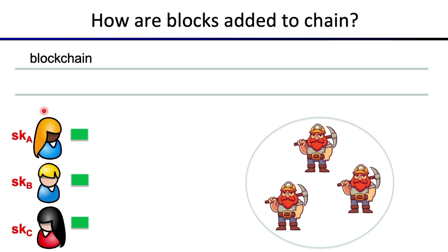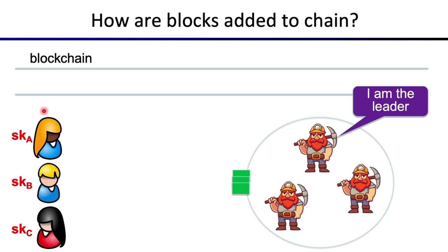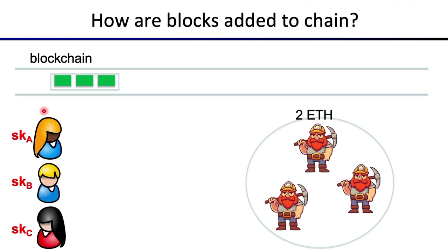Alice, Bob, and Carol each create a transaction on their own. They sign it using their secret key and send their transactions to the blockchain network — basically a collection of miners. They send those transactions to some miners, and then there's a gossip protocol that propagates all these transactions throughout the network. Then there's a leader election mechanism where one of the miners gets elected. The elected miner takes the current pending transactions — sometimes called the mempool — creates a block out of them, posts this block onto the blockchain, and receives the block reward.